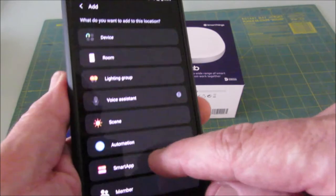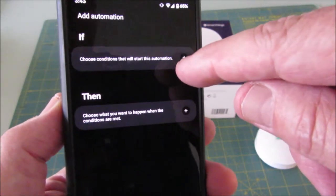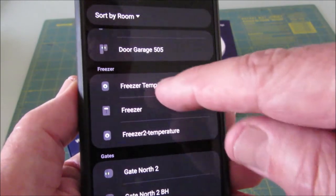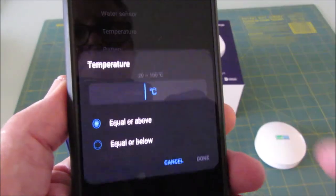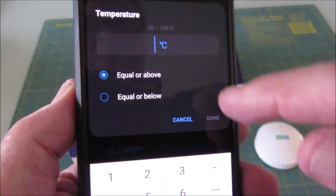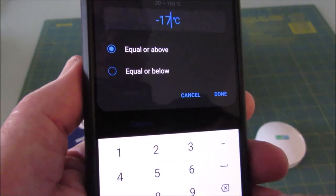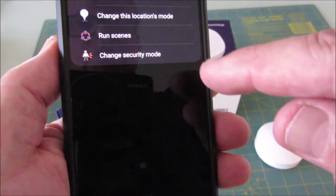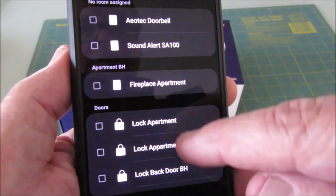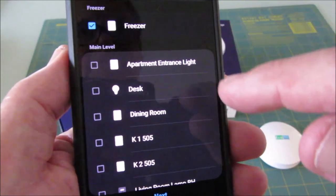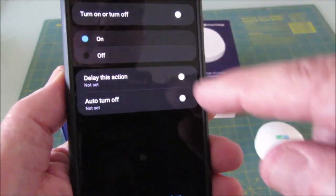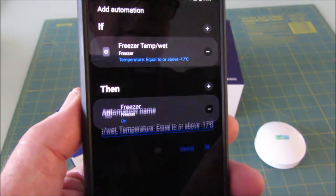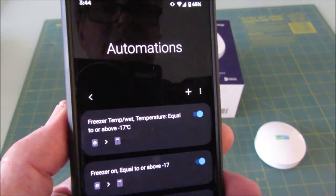Let me show you the program for that. We want to add automation and let's start with the condition. Device status, it's a freezer, so we want the temperature. If it's equal to or above let's go minus 17. Done, save. Then we want to turn the freezer on, so let's go control devices, find my room freezer, and turn it on. Save and done.